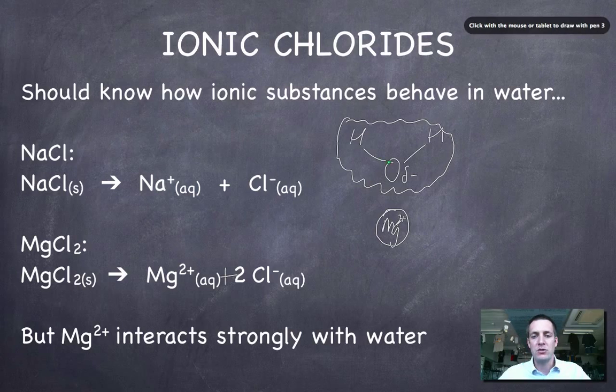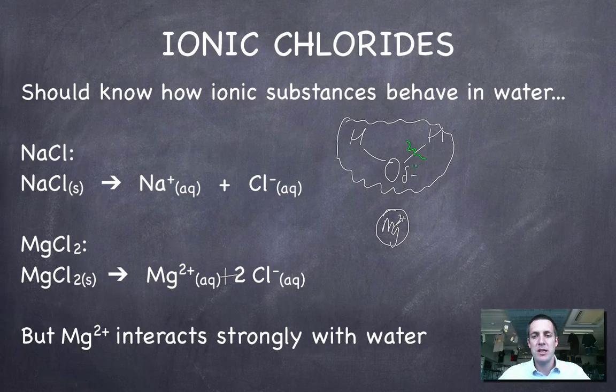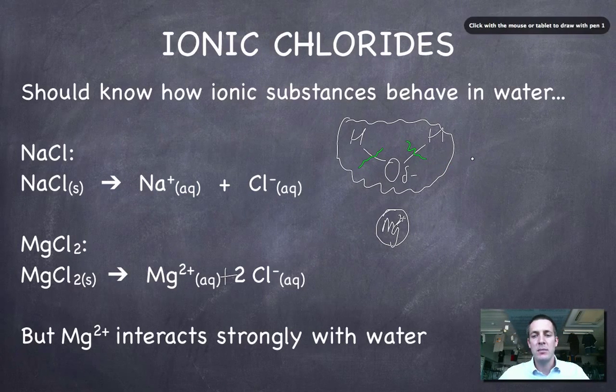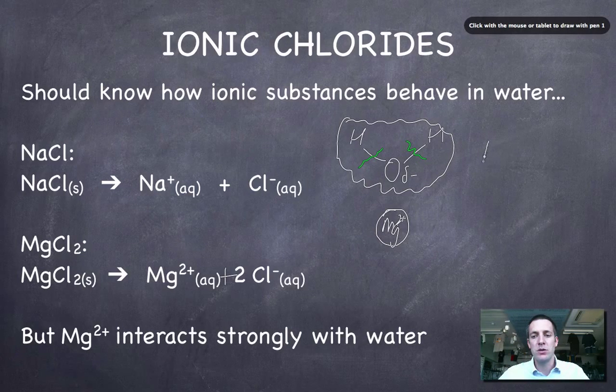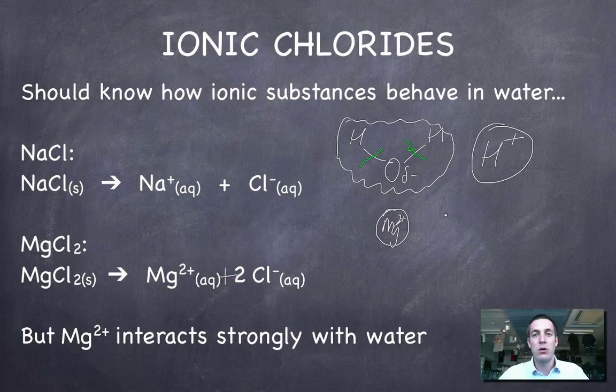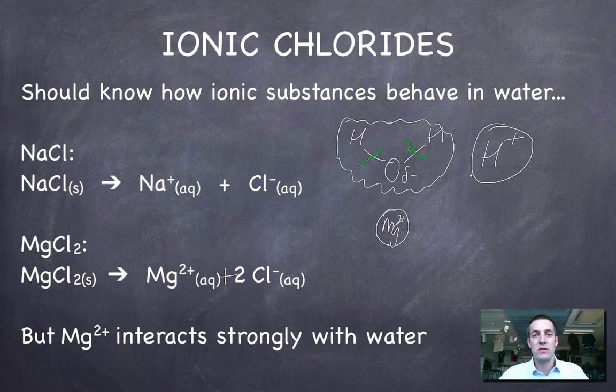If this positive ion is able to distort the electron cloud of the water molecule and pull electrons towards itself, that will mean that there'll be fewer electrons available for bonding in the water molecule. In other words, these bonds here will become weaker. If those bonds become weaker, then it becomes easier for this water molecule to lose H+ ions, and H+ ions are what make solutions acidic.